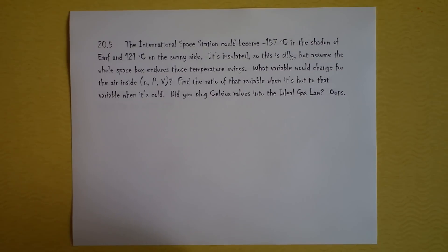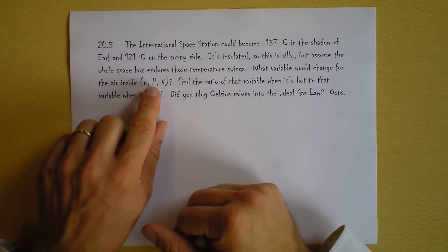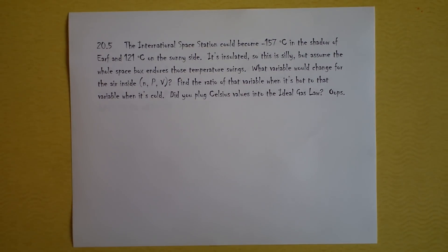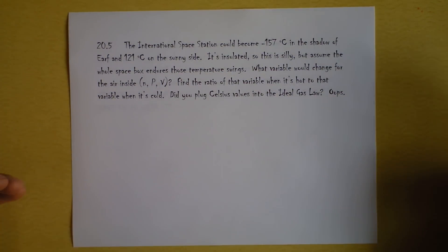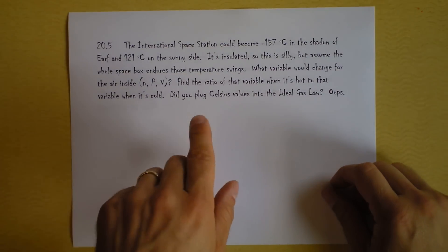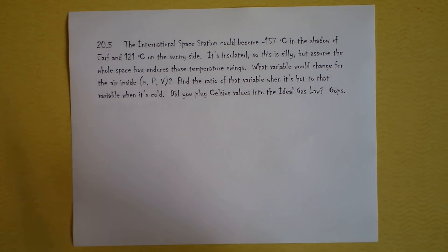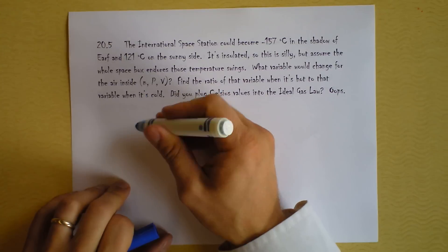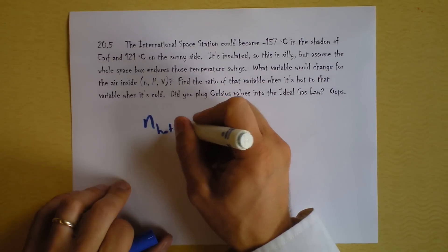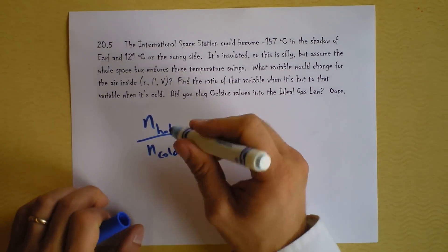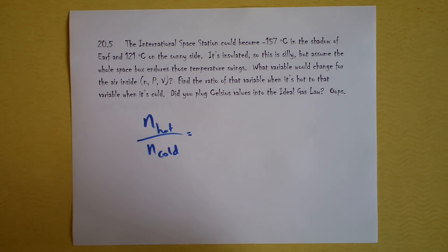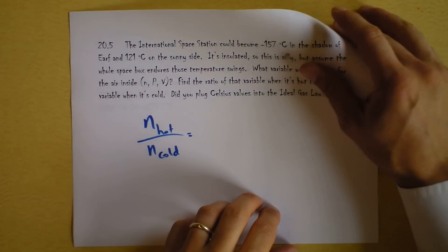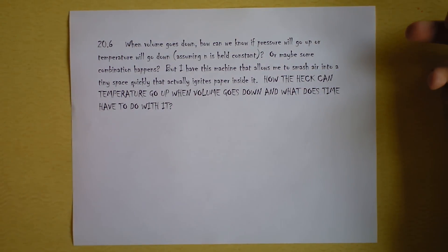What variable would change for the air inside? Would n change or p change or v change? So I'm actually asking you to figure out which one changes and then find the ratio of that thing hot over that thing cold. So this is a comparison problem. So let's say if we think that n changes we would say n hot divided by n cold. And then the nice thing about comparison problems is that there might be stuff that cancels out if you're plugging in for n's. And then I was wondering if we were going to use Celsius values. Don't do that. I mean oops, not whoops, oops.